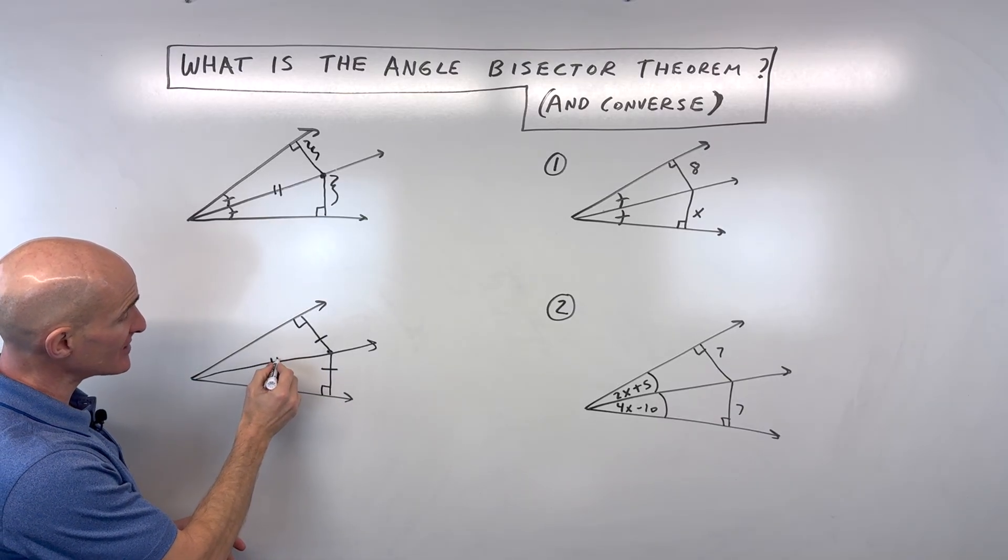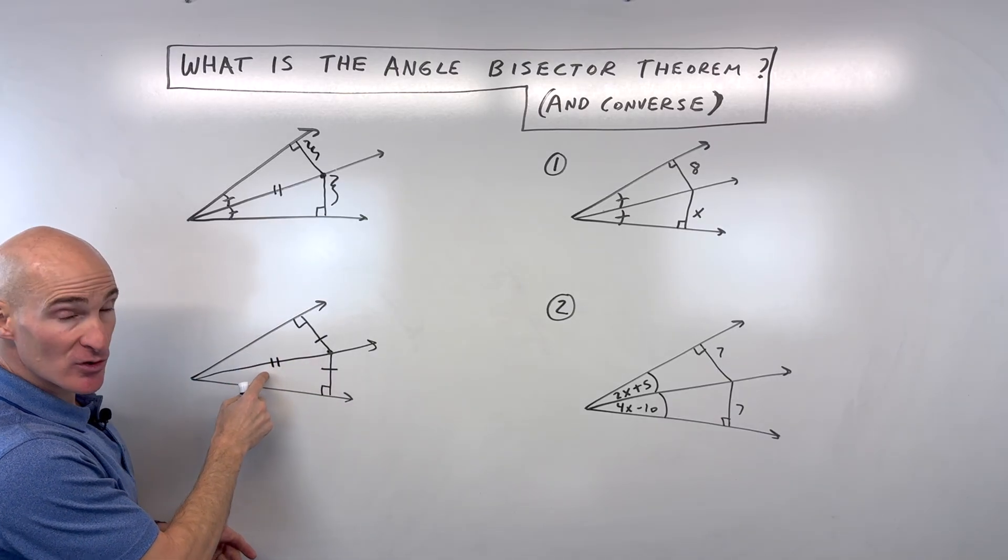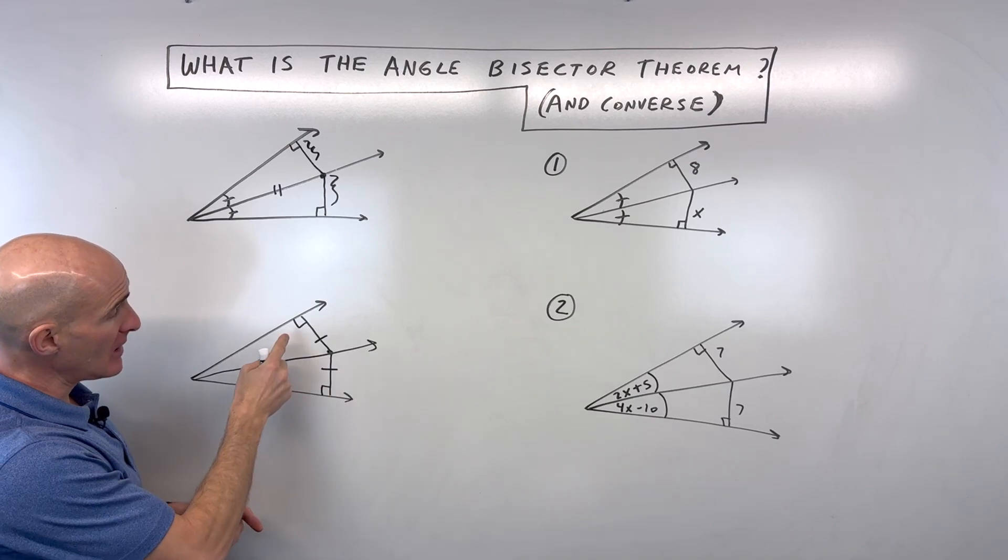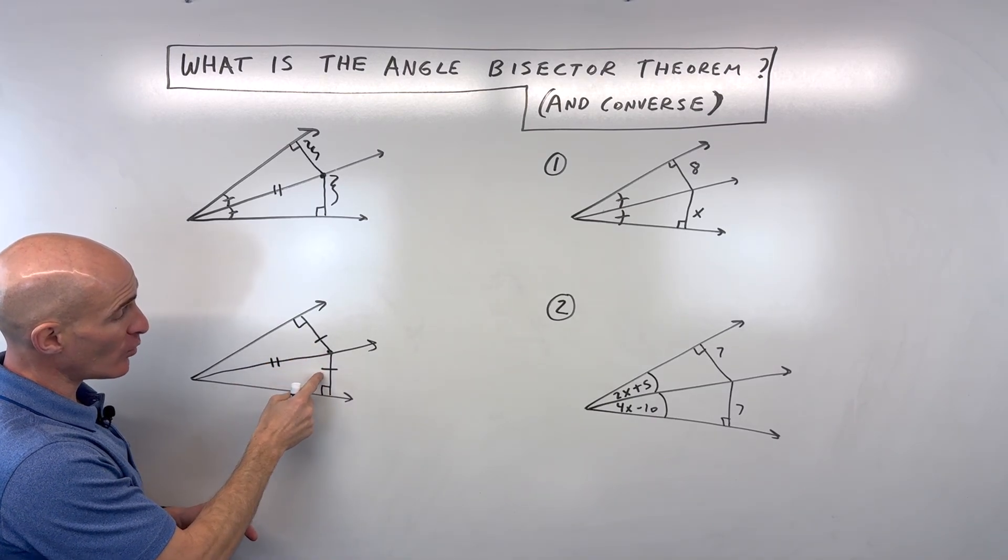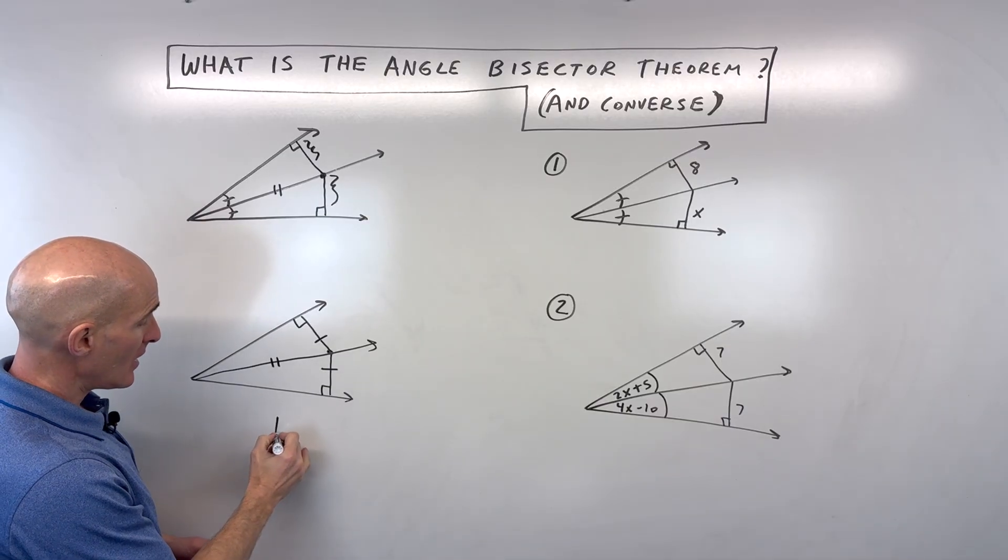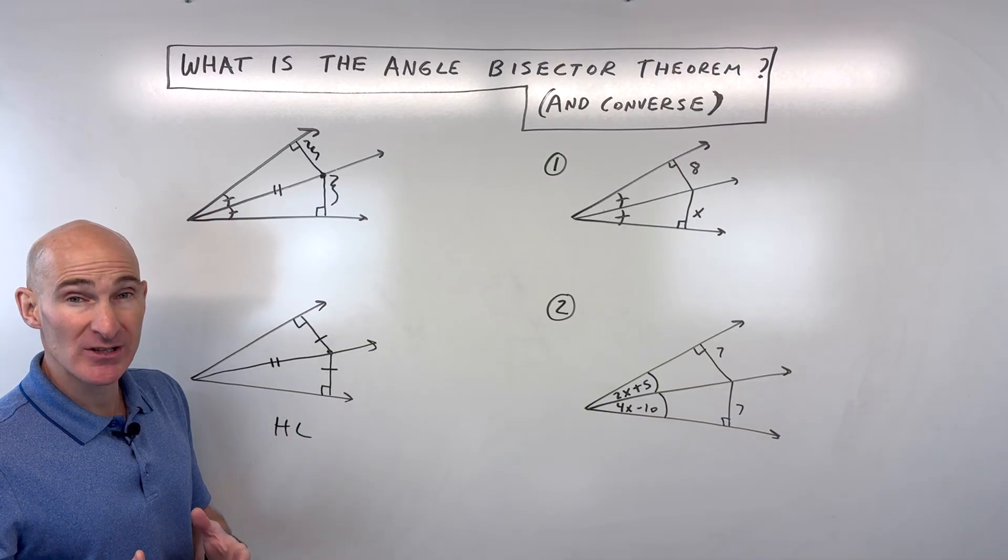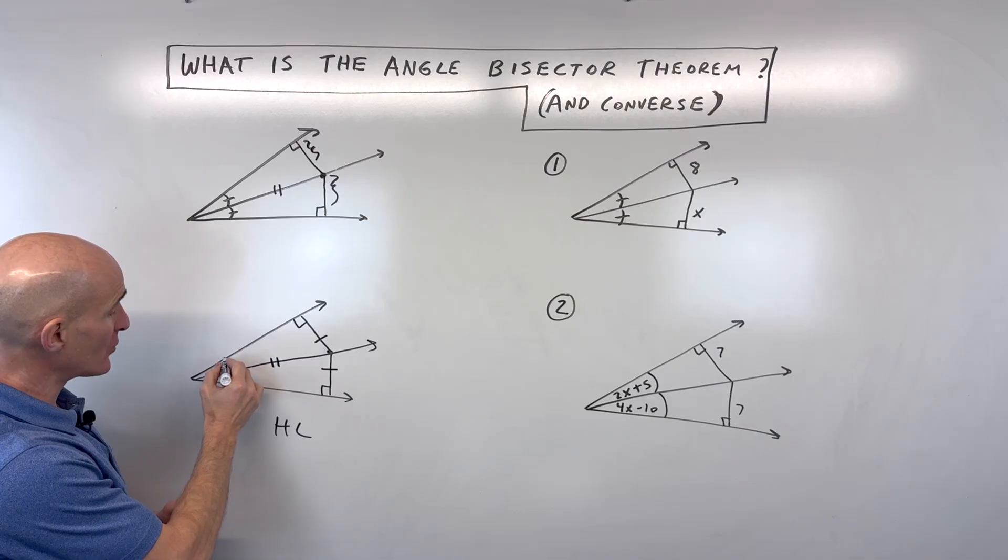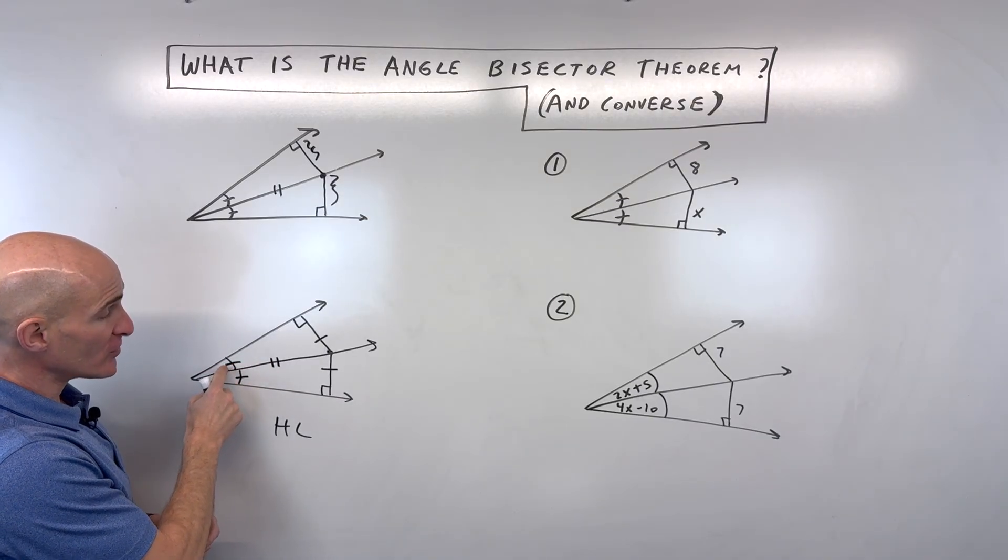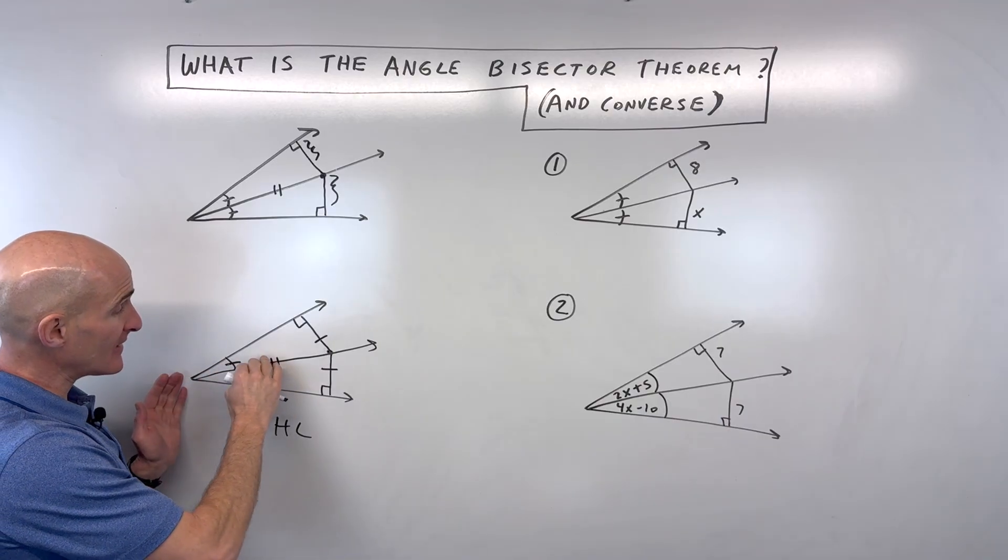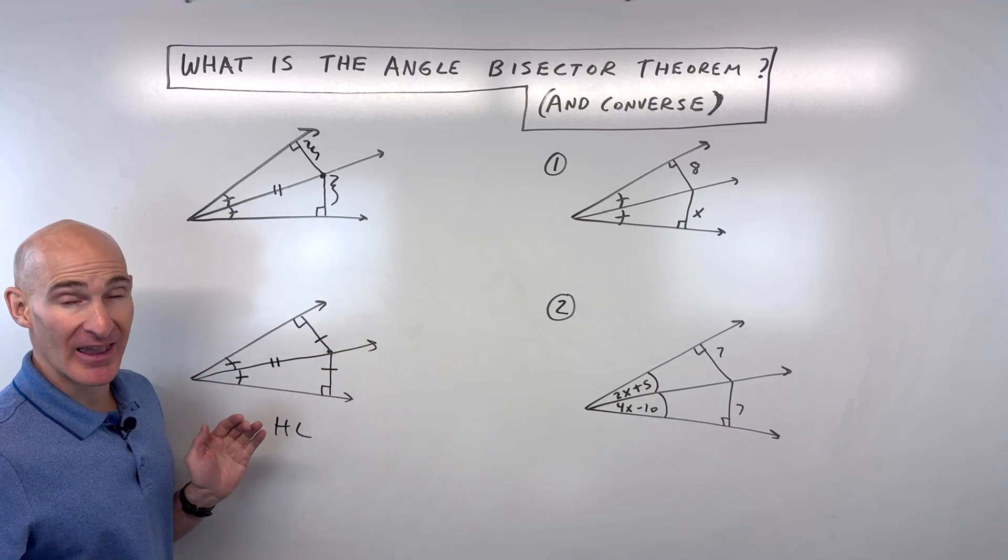Now you can prove this to yourself by using congruent triangles. Again, we notice that this is congruent because it's shared between the two triangles by the reflexive property. They're both right triangles. The hypotenuse is congruent in both triangles, and one of the legs is congruent in both the triangles. So that's the hypotenuse leg theorem. And by CPCTC, we can prove or show that these angles are congruent, meaning that this point lies on the angle bisector.